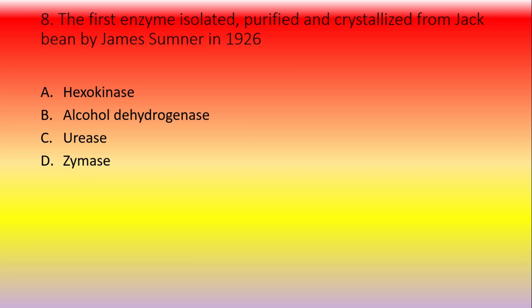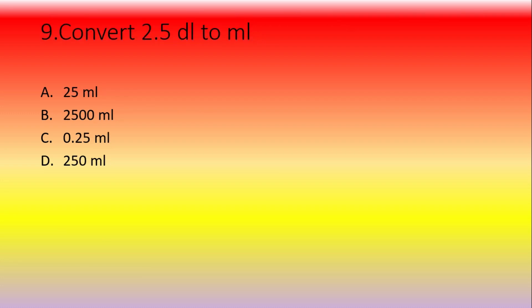The first enzyme isolated, purified, and crystallized from jack beans by James Sumner in 1926 — option A: hexokinase, option B: alcohol dehydrogenase, option C: urease, option D: zymase. The answer is urease.